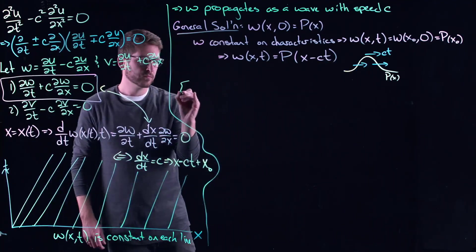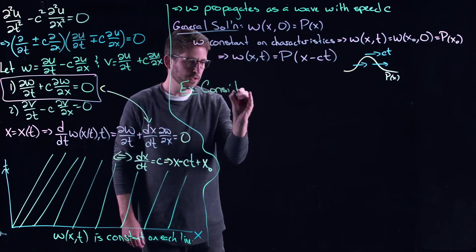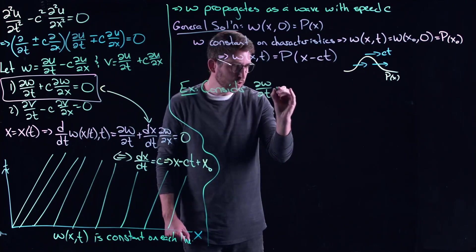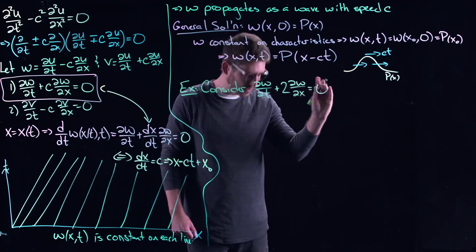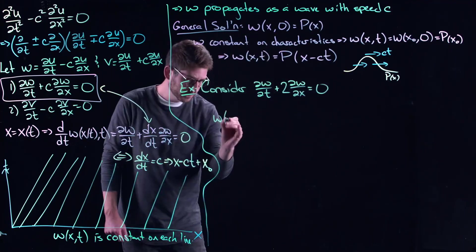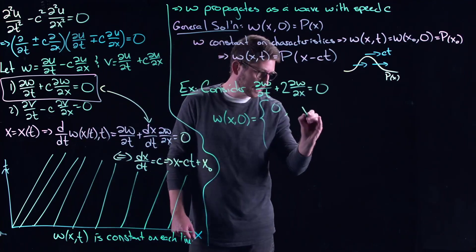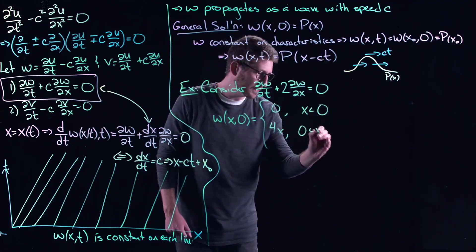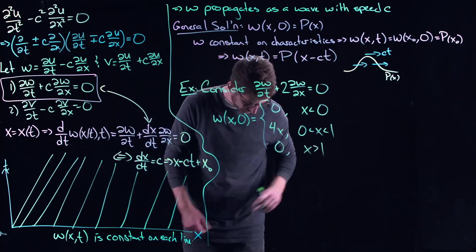Let's do an example. Let's consider this case. Consider partial w/partial t plus two, so here my value of c equals two, times partial w/partial x. We already know what the solution is, but the most important thing here is to ask ourselves, what would be the initial profile? Well, here's my initial profile: zero for x less than zero, it's going to be 4x for zero less than x less than one, and then it's going to be zero for x bigger than one.